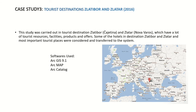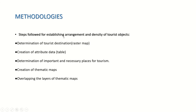Case study 3: tourist destinations in Zlatibor and Zlatar. This study was carried out in tourist destinations of Zlatibor and Zlatar, which have many tourist resources, facilities, products, and offers. Hotels and most important tourist places were transferred to the system. Software used includes ArcGIS 9.1, ArcMap, and ArcCatalog.